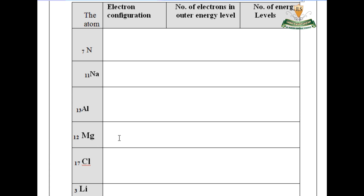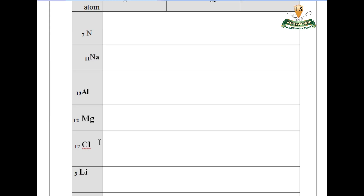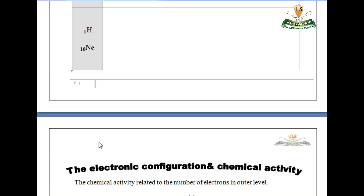For magnesium (Mg), atomic number 12: the electronic configuration is 2, 8, 2. The number of energy levels is 3 — K, L, M. The number of electrons in the outermost energy level is 2.